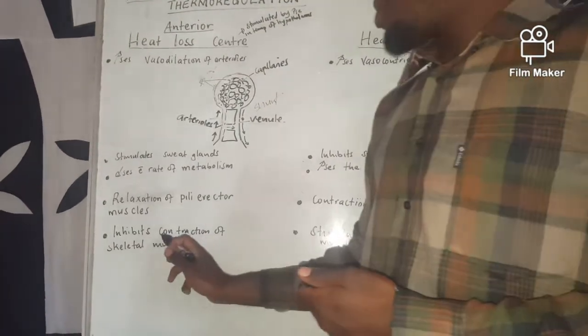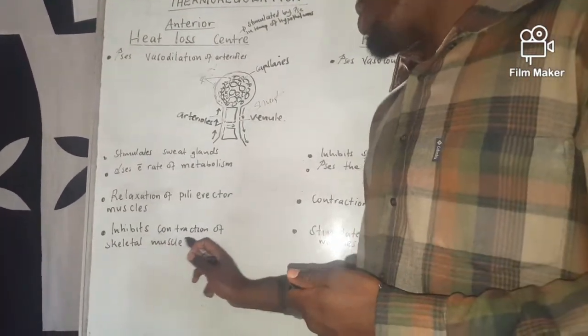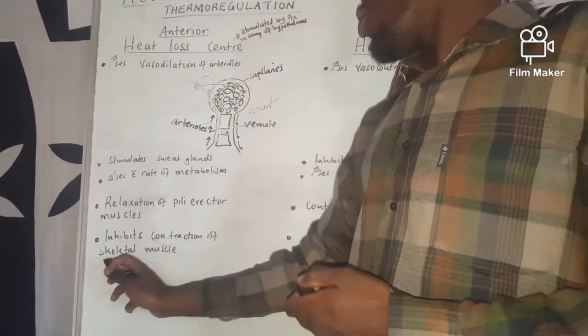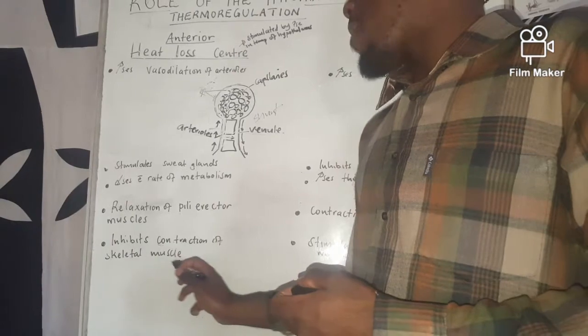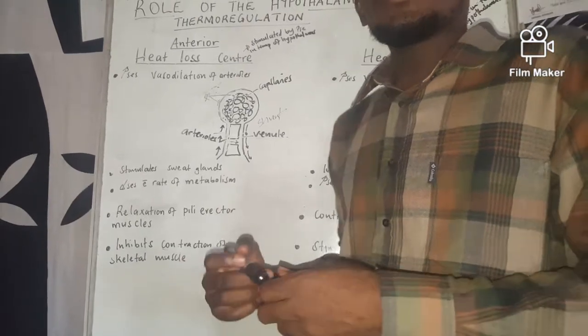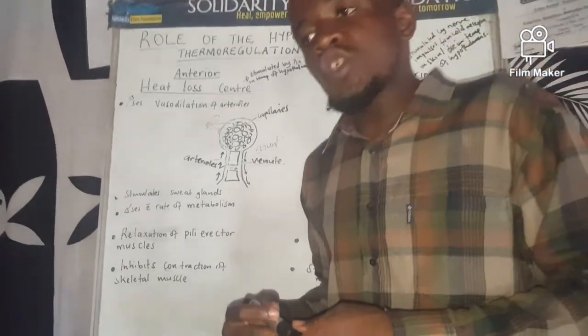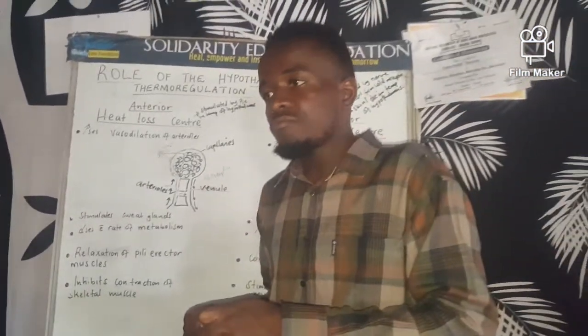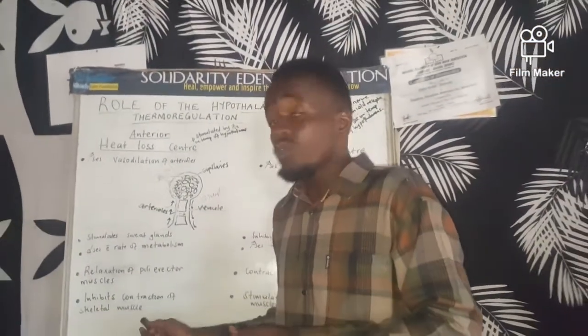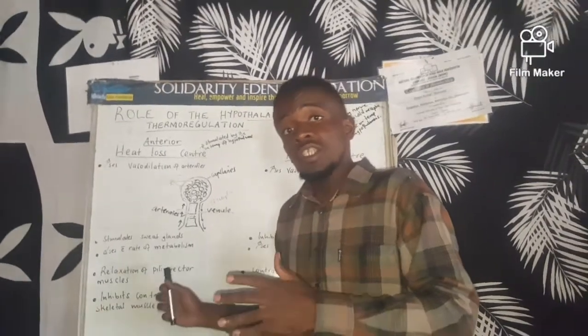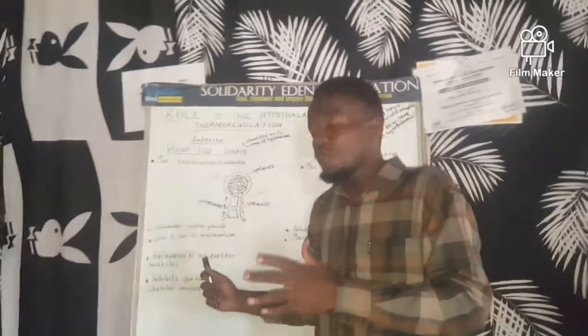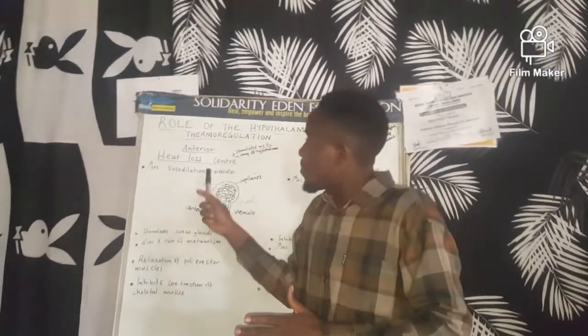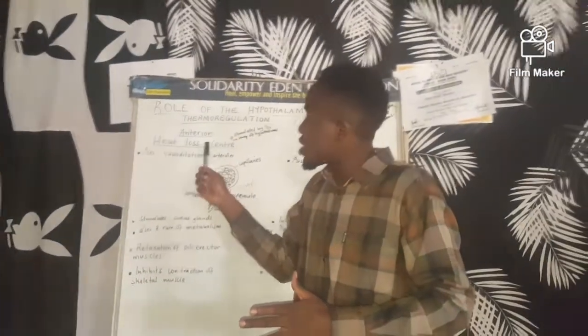There is also inhibition of the contraction of skeletal muscles. The contraction of skeletal muscles produces heat, which increases the body temperature, so inhibiting this contraction helps reduce heat production.